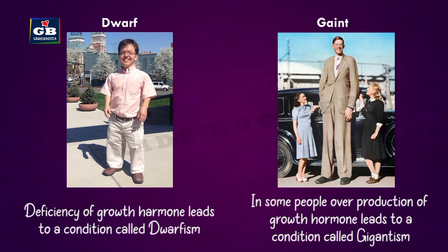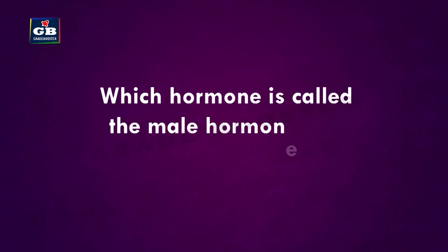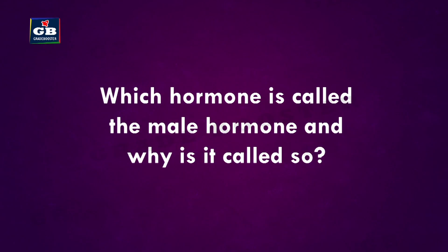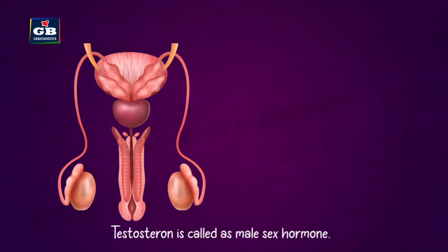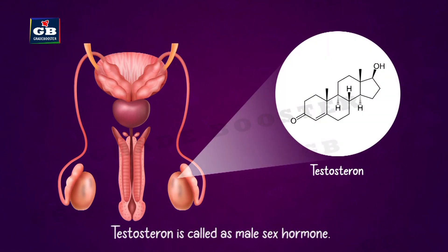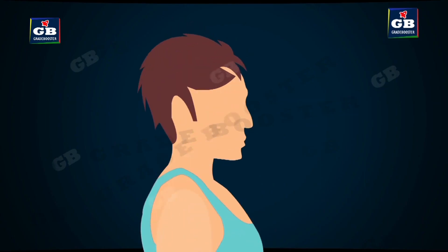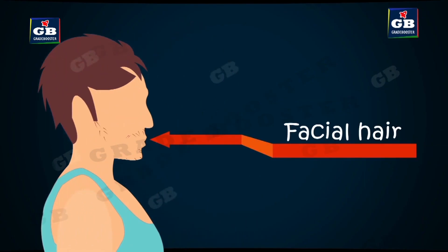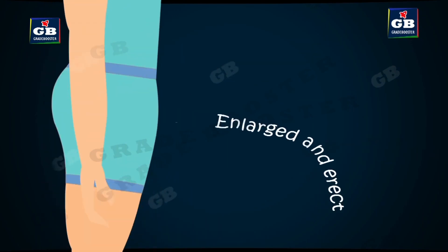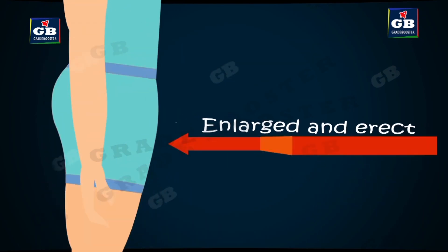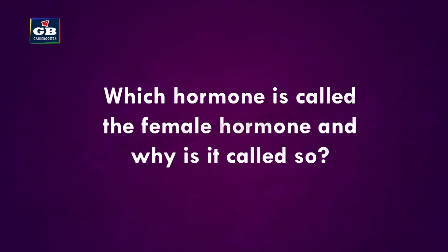Testosterone is called the male sex hormone because it helps in the development of secondary sexual characters in boys, such as growth of mustache and beard, development of testes, and production of sperms.